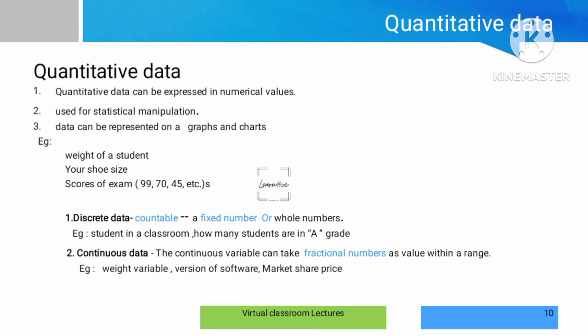Quantitative data can have operations performed on it — it consists of numerical values. We can perform numerical operations, which is why quantitative data is used in statistics. A graph or chart can be created easily. For example, a student's weight, shoe size, and scores are quantitative data — measurable data. There are two types: discrete data and continuous data. Discrete data is a fixed whole number that we can count, such as the number of students with an A grade. Continuous data consists of fractional numbers that can be updated continuously, for example a student's weight over time or software version numbers.